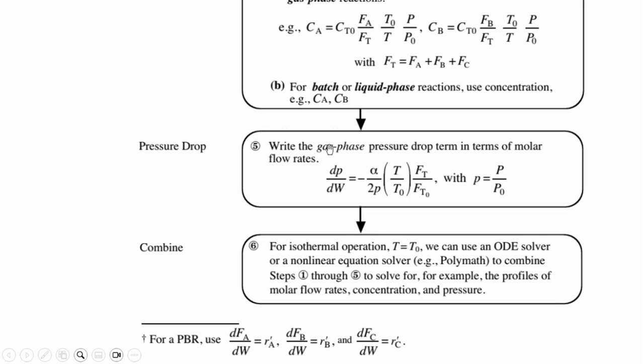Then we have to include the pressure drop in the system. If you remember, we recently solved numericals: dP/dW = -α/(2P)·(T/T0)·(FT/FT0) with P = capital P, which is the outer pressure over P0 initial pressure.